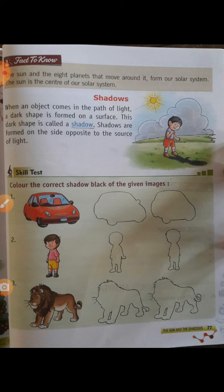Fact to know: The Sun and the 8 planets that move around it form our solar system. The Sun is the center of our solar system. When an object comes in the path of light, a dark shape is formed on a surface. This dark shape is called a shadow. Shadows are formed on the side opposite to the source of light.